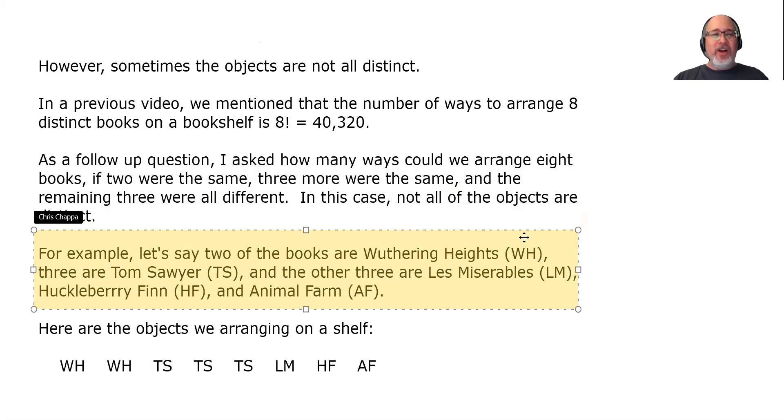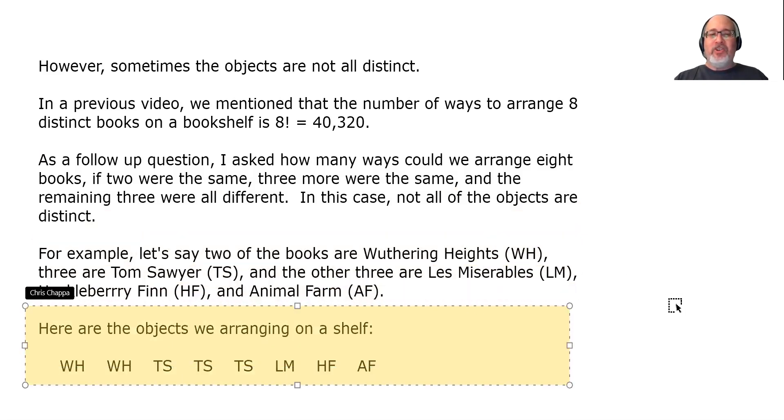Let's say that two of the books are Wuthering Heights. Three are Tom Sawyer, and the other three are Les Mis, Huckleberry Finn, and Animal Farm. So we got two copies of Wuthering Heights, three copies of Tom Sawyer, one copy of Les Miserables, one copy of Huckleberry Finn, and one copy of Animal Farm. In other words, here are the objects we are arranging on a shelf. Two WHs, three TSs, an LM, an HF, and an AF.